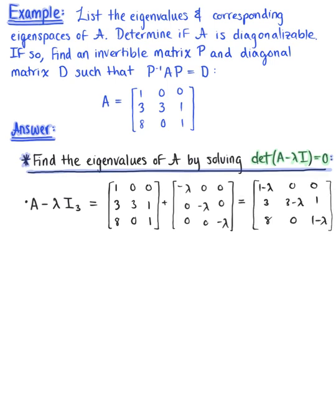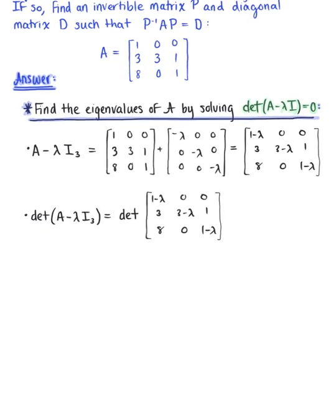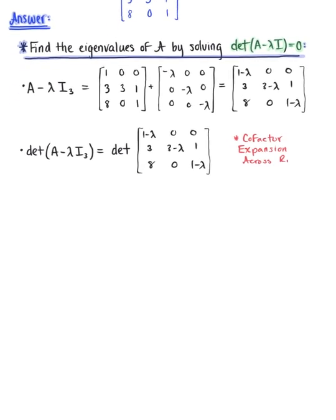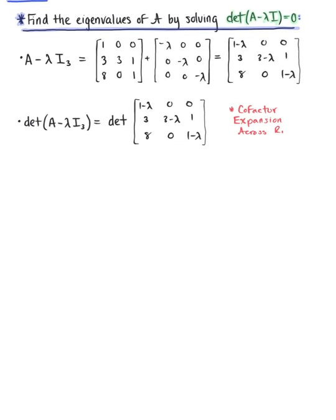We are now ready to find the determinant of matrix A minus lambda times the 3 by 3 identity. We will compute the determinant by doing a cofactor expansion across row 1, leaving us with 1 minus lambda multiplied by the 2 by 2 determinant with entries 3 minus lambda, 1, 0, 1 minus lambda.